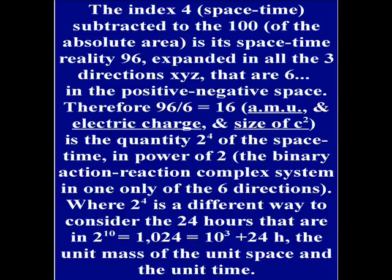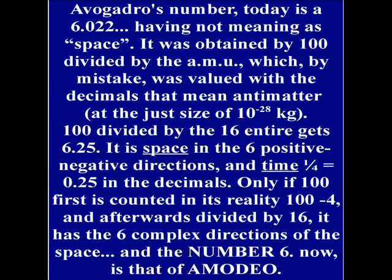In the quantity 2 rise to 4 of the space-time, in power of the 1 base 2, the binary action-reaction complex system, in one only of the 6 directions, where 2 rise to 4 is a different way to consider the 24 hours that are in 2 rise to the absolute 10, and equal to 2 rise to the mass 10 rise to the 3, plus all the time of 24 hours — the unit of mass, the unit of space, and the unit of time.